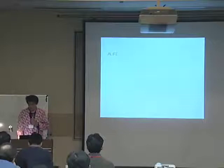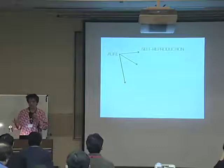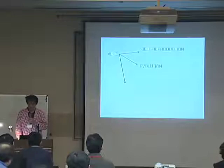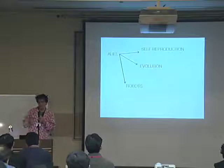Artificial life is classified into three different categories. One is self-reproduction — how to understand self-reproduction is the main topic in artificial life. The second one is how to make an evolutionary system, which has also been done in computer simulations. The third one is robotics — how to make a self-moving entity.